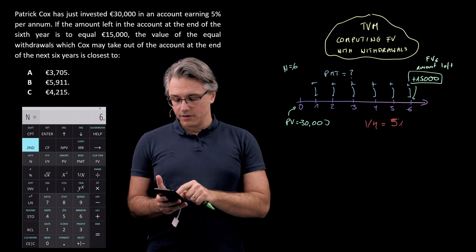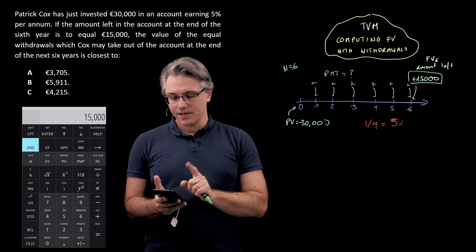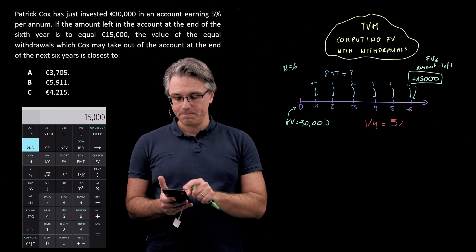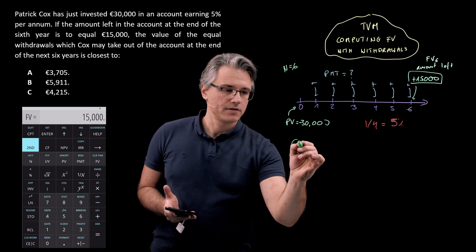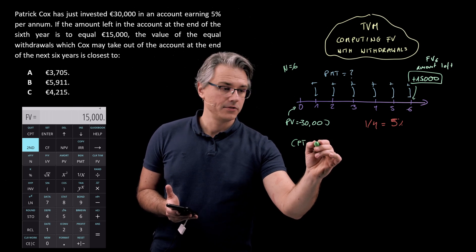The PMT is what we're looking for. €15,000 is our input for FV. And we're getting the calculator to compute, so CPT then PMT.